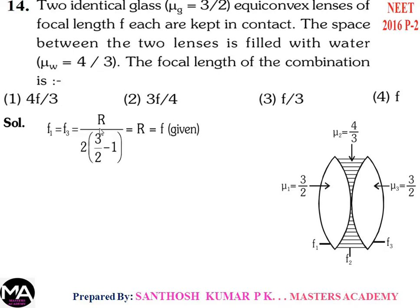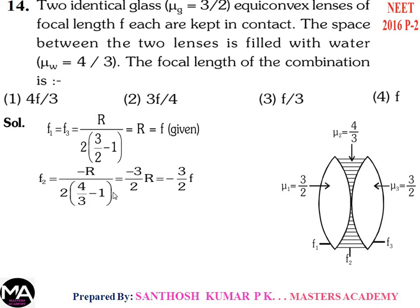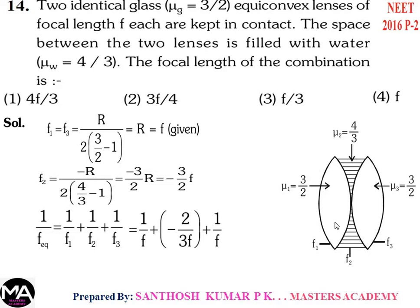f1 and f3 equal r/2 × (3/2 − 1) = f. For the concave lens f2 = −r/2 × (4/3 − 1) = −3/2 × f. The equivalent focal length: 1/f_eq = 1/f1 + 1/f2 + 1/f3 = 1/f + (−2/3f) + 1/f. Calculating: 1/f_eq = 4/3f, so f_eq = 3f/4. Therefore the answer is option 2.